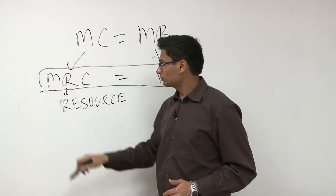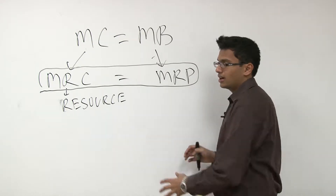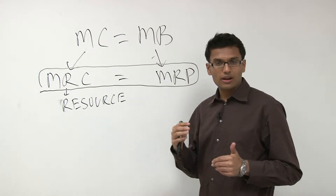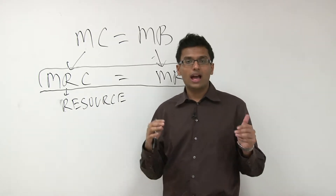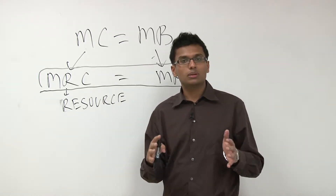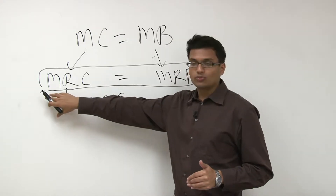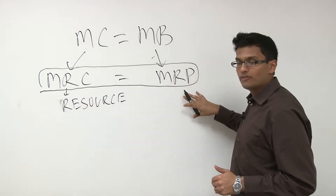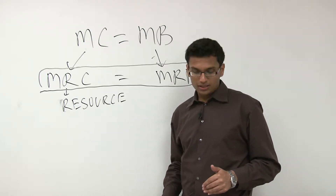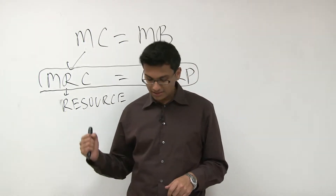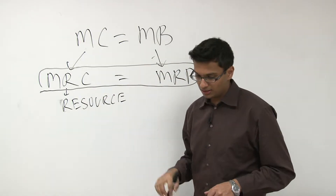So how can firms use this to understand how many people to hire? If a firm wants to hire — whether 5, 10, or 12 people — they calculate the marginal resource cost and the marginal revenue product of labor to get the answer. You basically hire to the point where MRC equals MRPL.